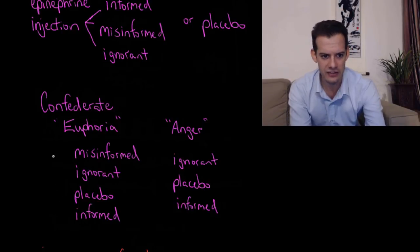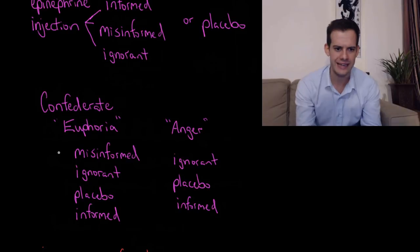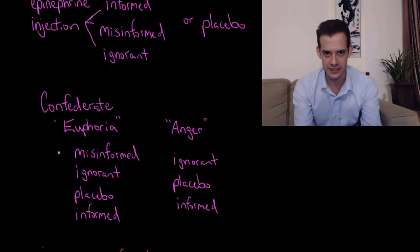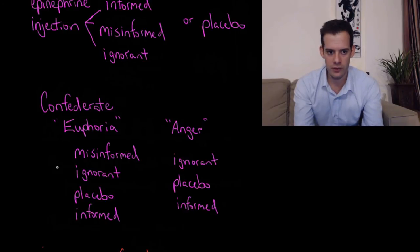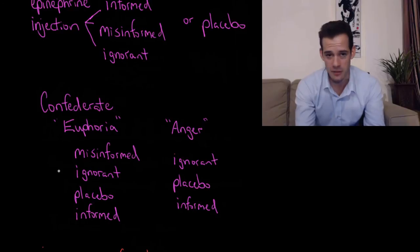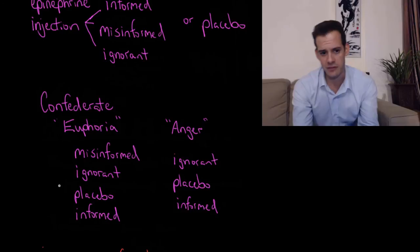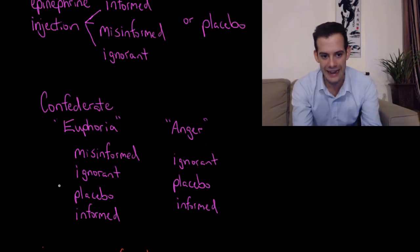This list here shows us who were happiest—which participants were happiest. It started with the people who were misinformed about the drug. The idea was that they didn't know why they were feeling their heart beating more quickly, and they were misinterpreting that as 'well I guess I'm feeling happy too. I'm feeling kind of giddy and silly just like this confederate that I interacted with.' The people who were ignorant of what the drug was going to do were probably also making a similar mistake, but maybe they had some suspicion it was from the drug or something. Remember, they didn't know anything about the injection. Then next we have the placebo group, not impacted quite as much.